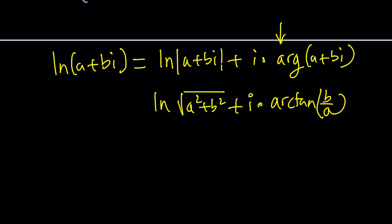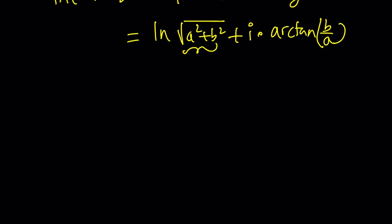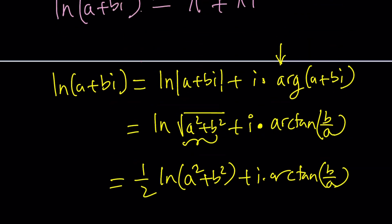So this one can be written as (a² + b²)^(1/2). So we can bring this one half to the front just to make it a little nicer. And then this arctan is just going to stay there. And then we're going to set it equal to the right hand side, which is π + πi.